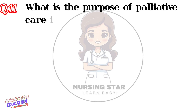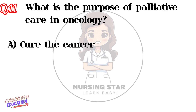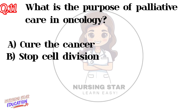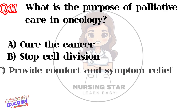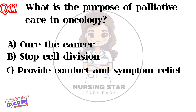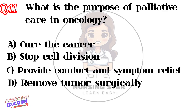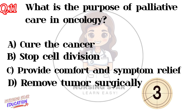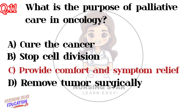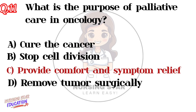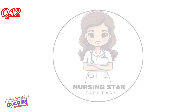Question number eleven: What is the purpose of palliative care in oncology? Option A: Cure the cancer. Option B: Stop cell division. Option C: Provide comfort and symptom relief. Option D: Remove tumors surgically. Correct answer: C — Provide comfort and symptom relief.